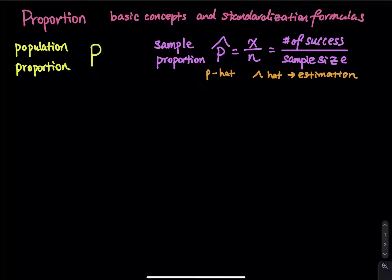For example, if I have 50 people in a classroom and 30 of them drive their own car to school, then the sample proportion is 30 out of 50. That works just like relative frequency. Similarly, if I have 2,000 people in a high school and 600 of them are seniors, then the sample proportion is 600 out of 2,000.